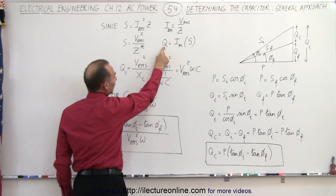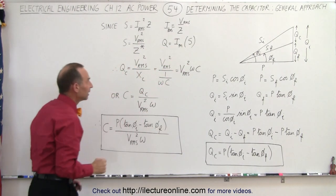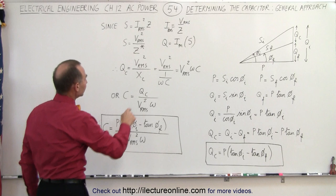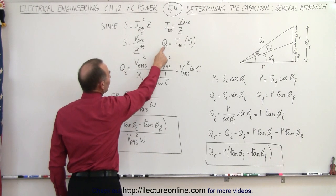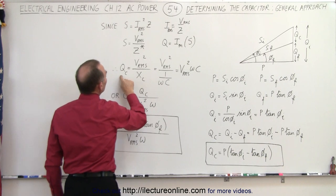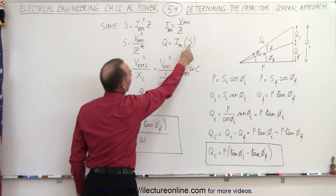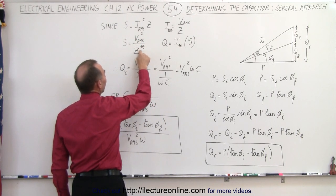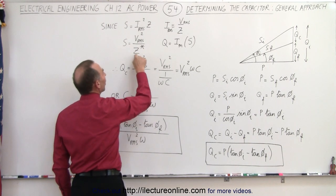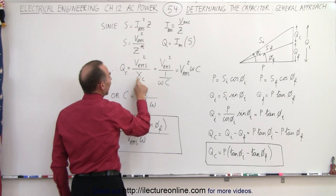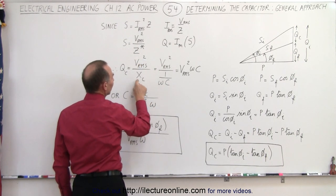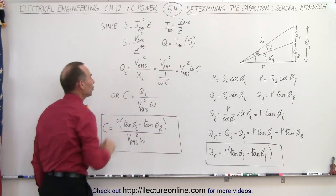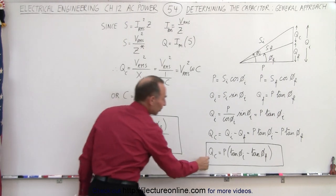We realize that the reactive power is the imaginary part of the complex power. Therefore Q_c, the reactive power of the capacitance, equals the imaginary part of the complex power. The imaginary part will be V_rms² divided by the reactive component of the impedance, X_c, instead of Z. Since X_c equals 1 over ωC, this gives us Q_c equals V_rms² times ωC.